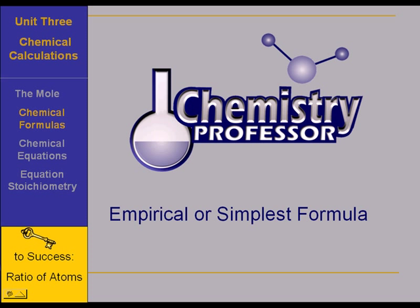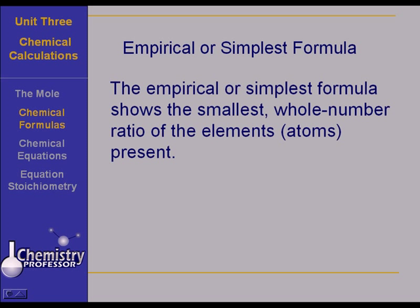To determine simplest or empirical formulas, the key to success is determining the ratio of the atoms present. The empirical or simplest formula is simply the smallest whole-numbered ratio of the elements or the atoms that are present.